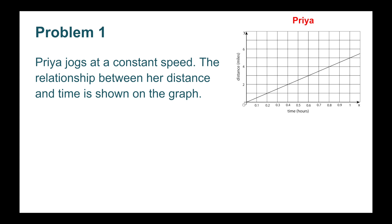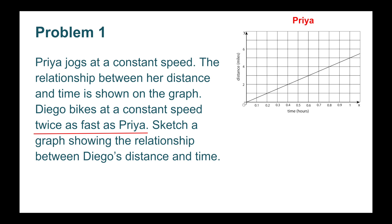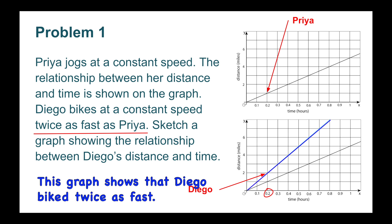Number 1. Priya jogs at a constant speed. The relationship between her distance and time is shown on the graph. Diego bikes at a constant speed twice as fast as Priya. Sketch a graph showing the relationship between Diego's distance and time. In 2 tenths of an hour, Diego jogged 2 miles. In 2 tenths of an hour, Priya jogged only 1 mile.